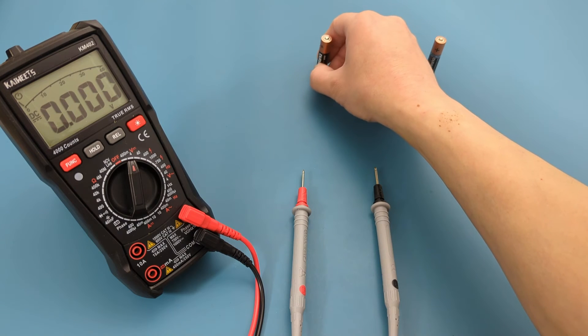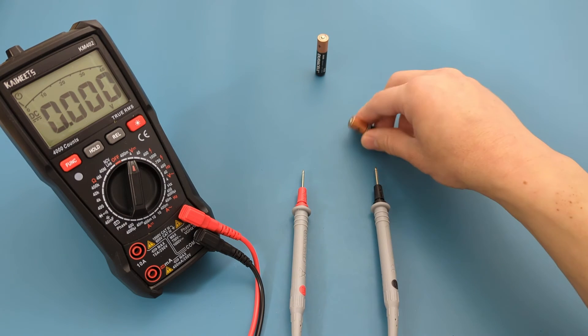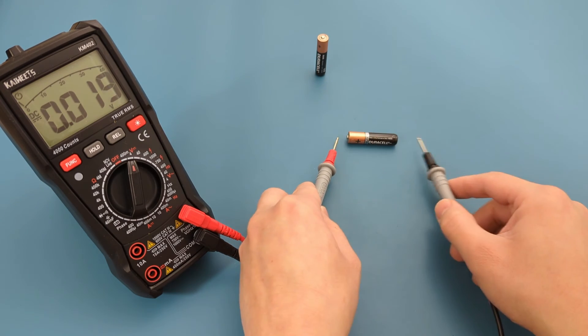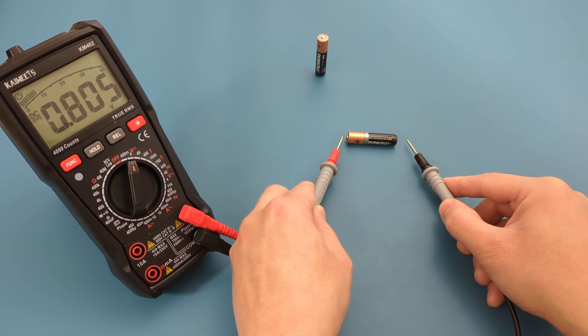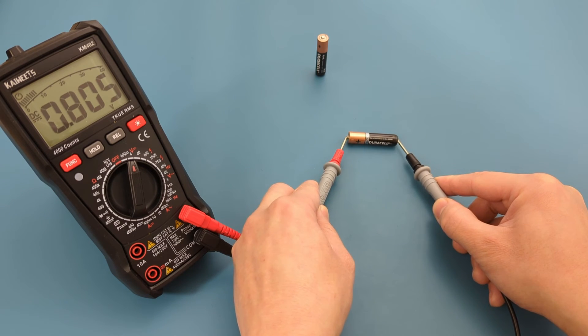Let's test the other battery. We only see around 0.8 volts, confirming that this battery is dead.